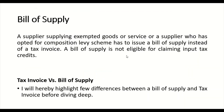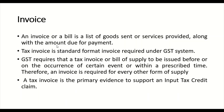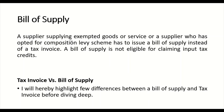Now, bill of supply. Tax invoice and bill of supply are different things. A supplier supplying exempted goods or services, or a supplier who has opted for the composition levy scheme, has to issue a bill of supply instead of a tax invoice. A bill of supply is not eligible for claiming input tax credit because the issuer is either supplying exempt goods, is a composition scheme dealer, or is an unregistered person.